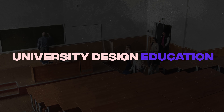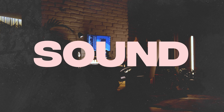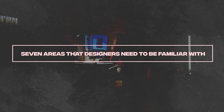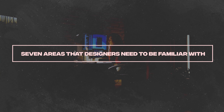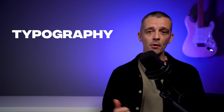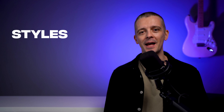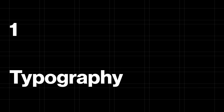If you skipped the expensive university design education but still want to sound like a professional, I'm going to break down seven areas that graphic and web designers need to be familiar with: typography, color, composition, image editing, web, print, and design styles. Typography is the art of arranging type to make the written word readable and visually appealing.